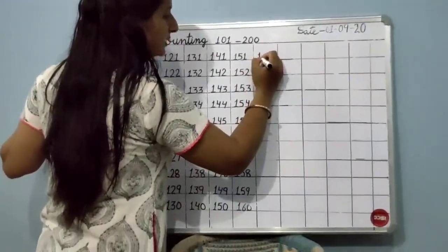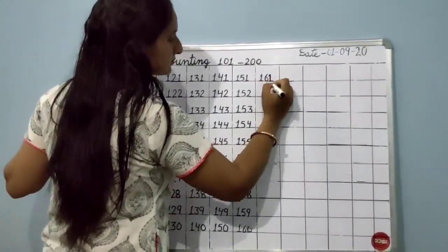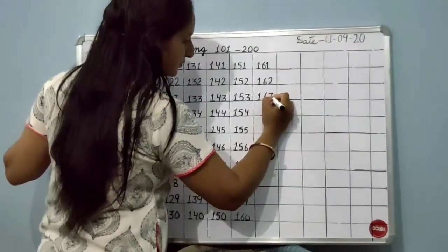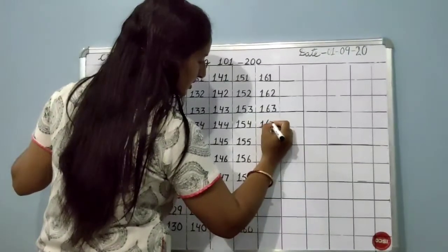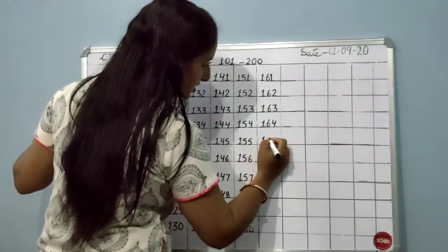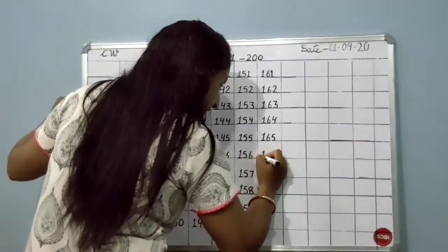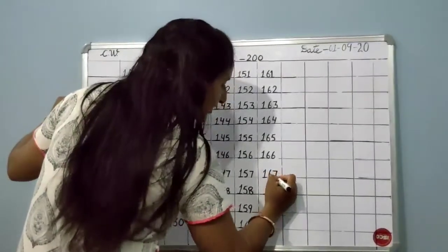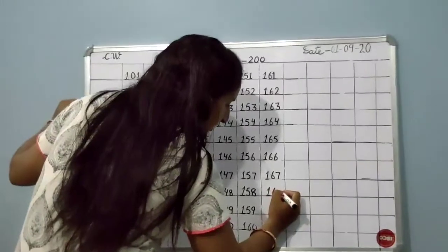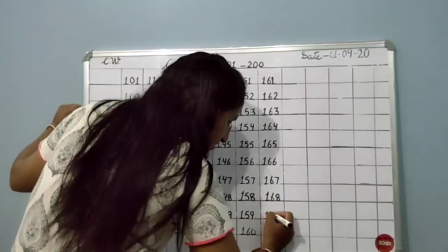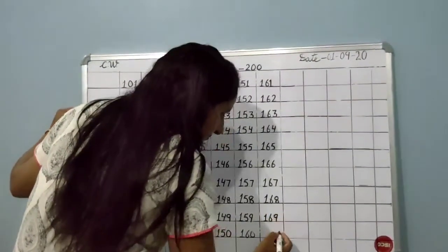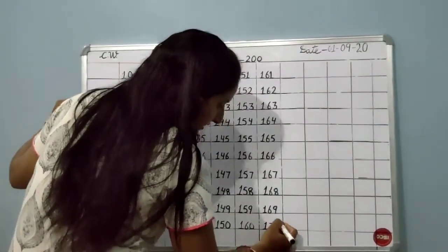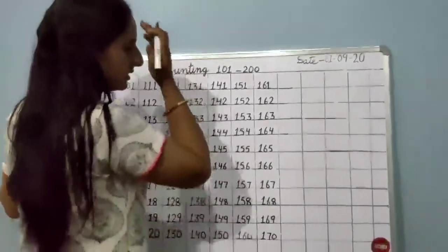Next slide. 161, 162, 163, 164, next 165, 166, 167, 168. Now 169 — after 69 comes 169. Then 170. This is 170. Now next line.